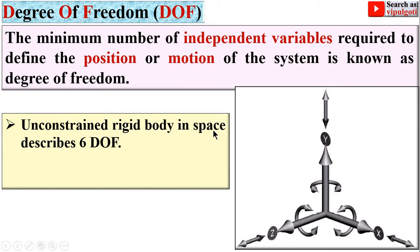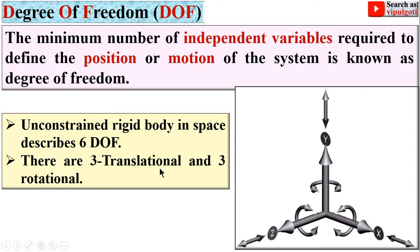An unconstrained rigid body in space has six degrees of freedom. There are three translational motions and three rotational motions. The three translational motions are on the x-axis, y-axis, and z-axis, and the three rotational motions are about the x-axis, y-axis, and z-axis. Now let's see each of these six different motions of the body one by one.